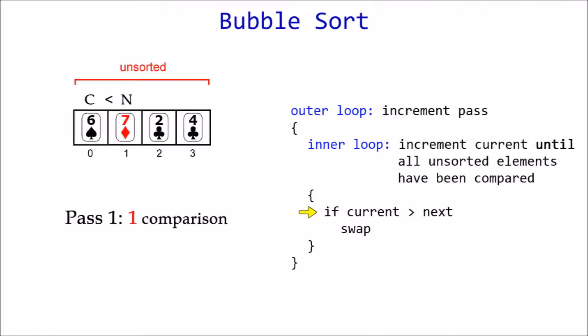Six is not greater than seven, so we simply increment current and try again. This time current is greater than next, so we advance seven up the list by swapping it with the two of clubs. Then increment current again.